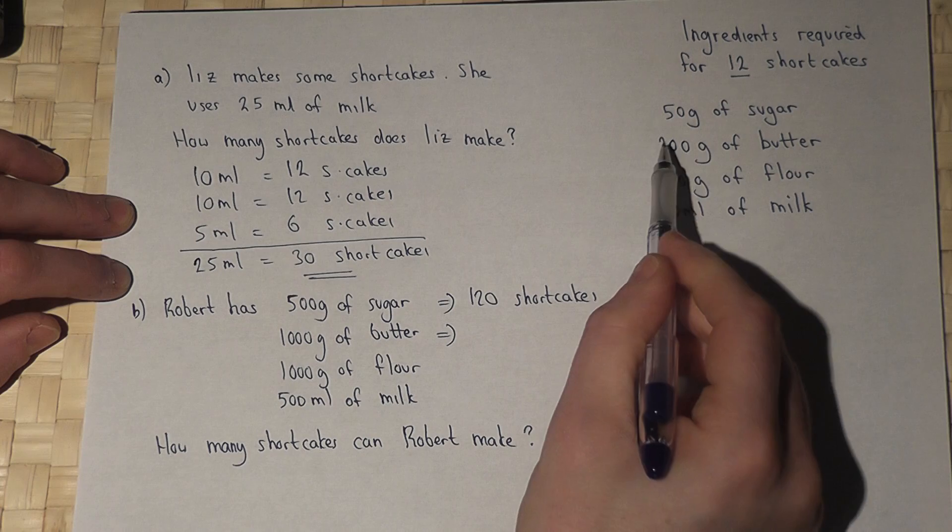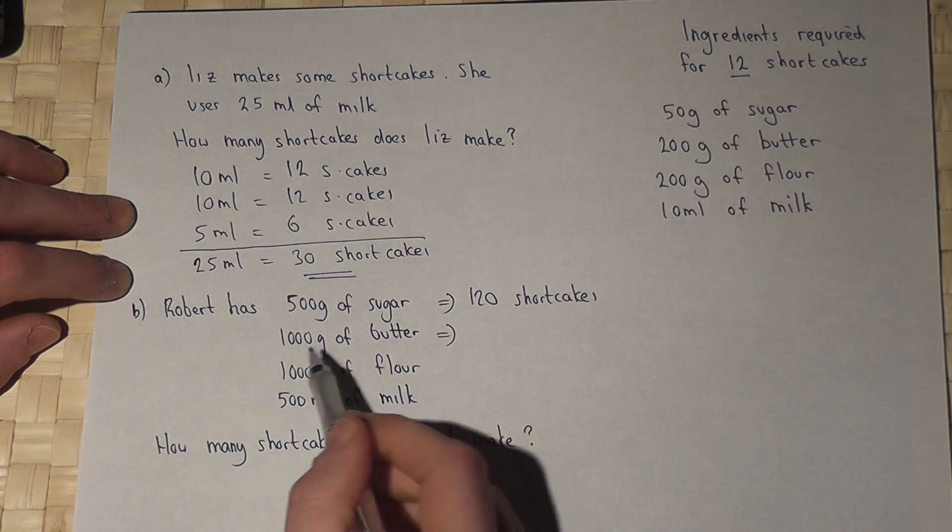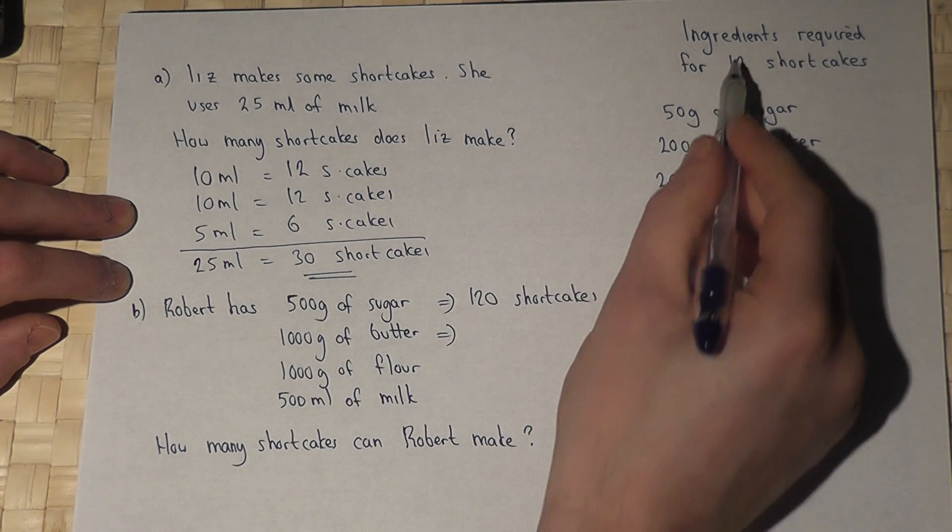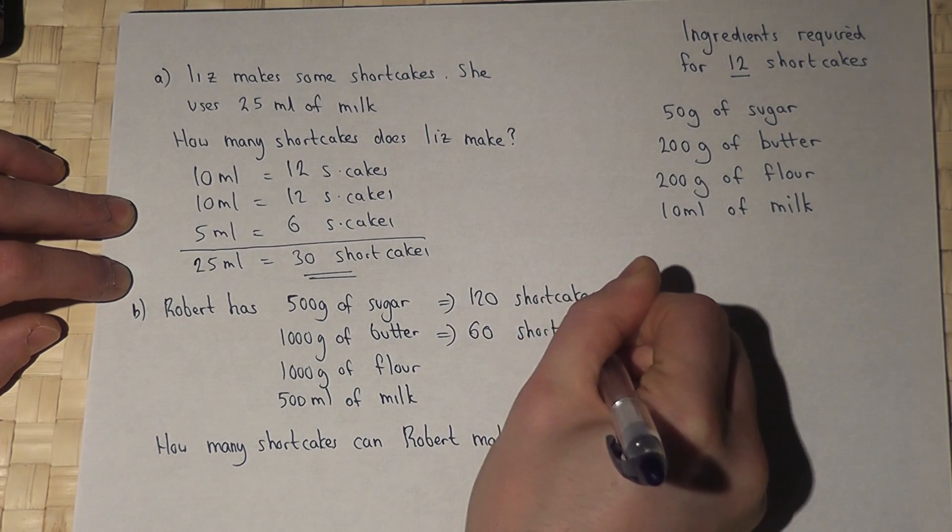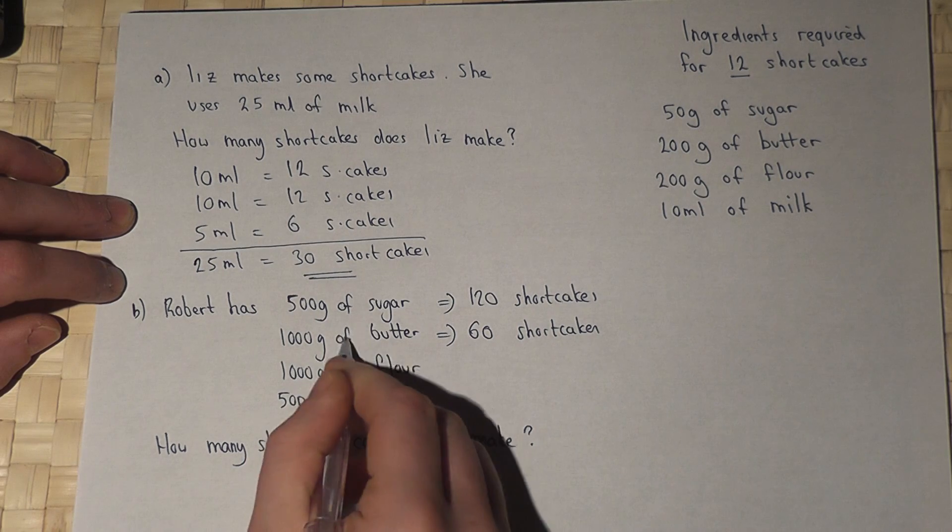However, if 200 grams makes 12, then 1,000 will make 5 lots of 12, which is 60. So this limitation means you can only make 60.